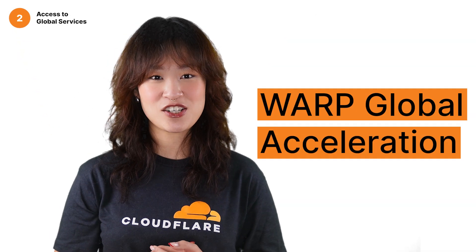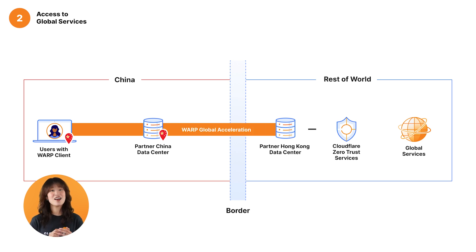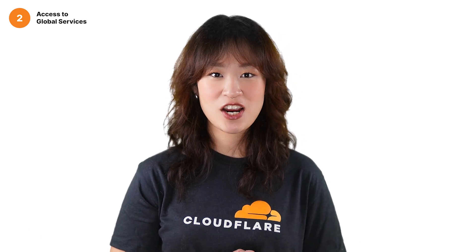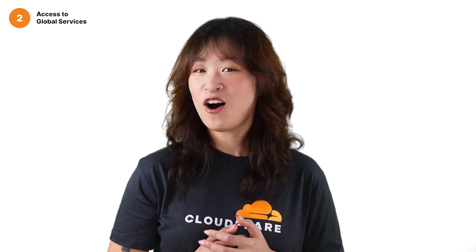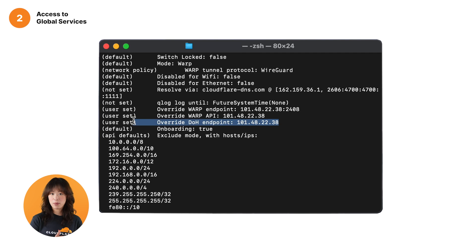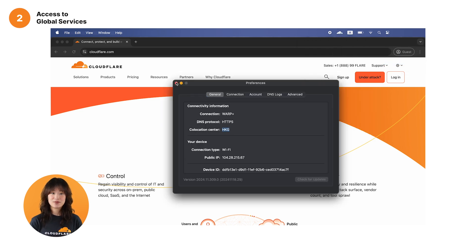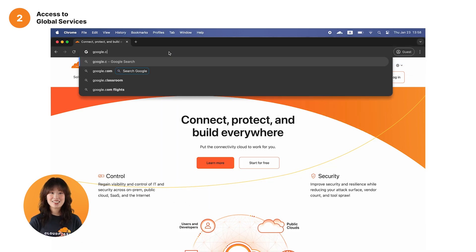With Warp Global Acceleration, the Warp client can be extended to China for your users under pre-signed agreements to access the same zero-trust network access services as the rest of your global users, while experiencing stable connectivity anywhere within China — whether at home or a coffee shop. Once you receive your dedicated China IPs through Cloudflare and have Warp set up, all you need to do is override the following Warp endpoints for each device: Warp endpoint, API endpoint, and DOH endpoint. Then verify the co-location center is your desired location under Warp preferences, and you should be able to access global services.